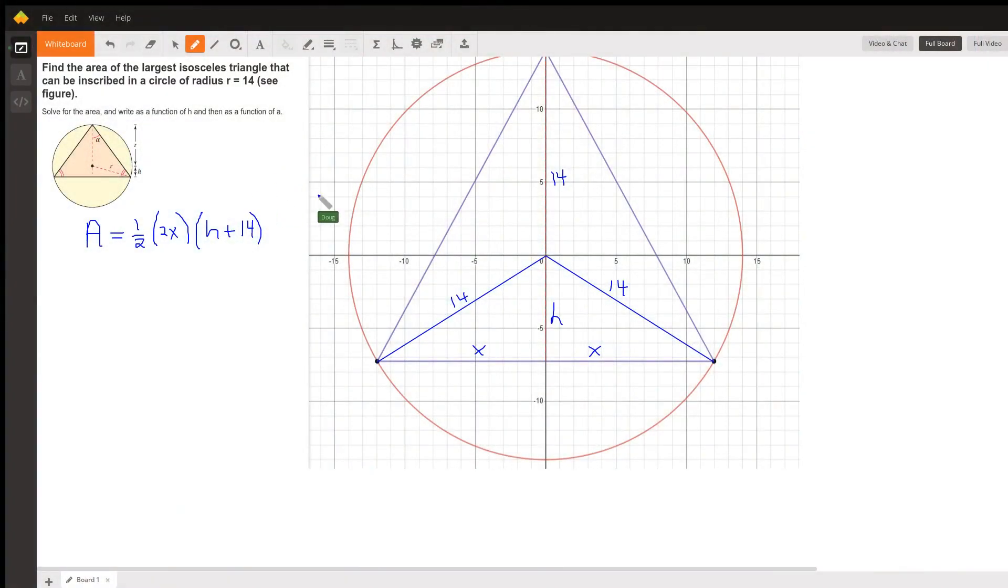I started on part A, right? The area as a function of H, and talk about how we can use that function to find the maximum area of the isosceles triangle. So, here's the isosceles triangle.